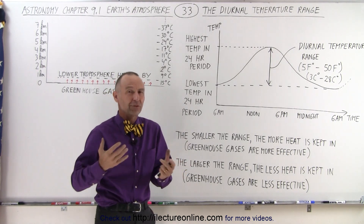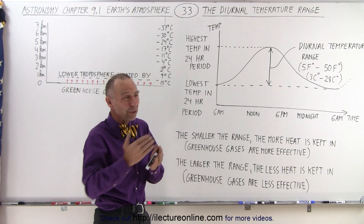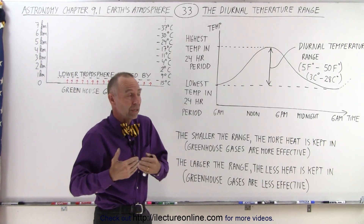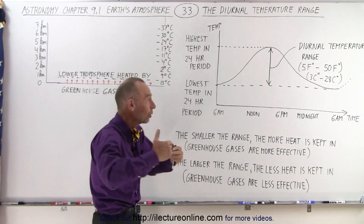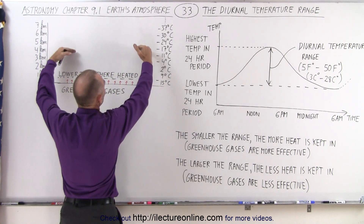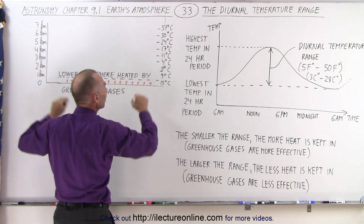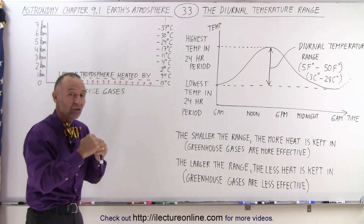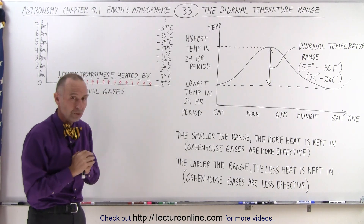We used to think as kids that the coldest time of the night would be like maybe at midnight, but that's not the case because all throughout the night, the temperature continues to decrease because there's no influx of heat, the sun isn't shining, and slowly the heat is leaking from the lower troposphere into higher regions of the troposphere, and so the temperature is slowly decreasing until the sun comes up over the horizon and begins to shine again, and starts adding more energy to the lower troposphere.